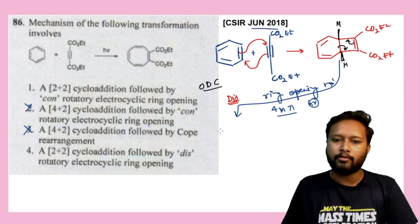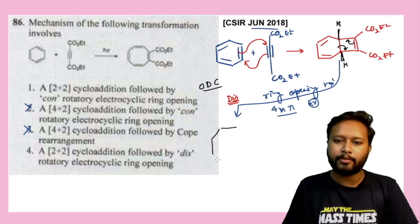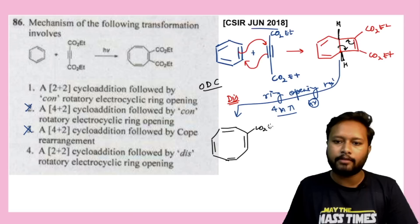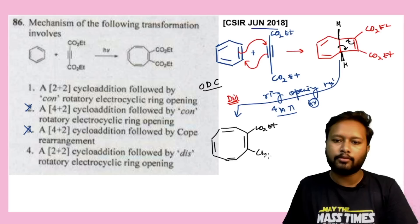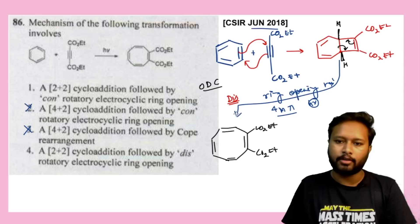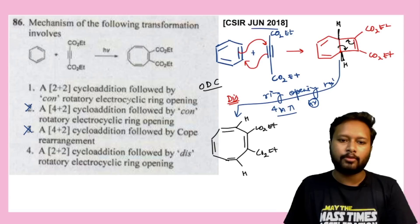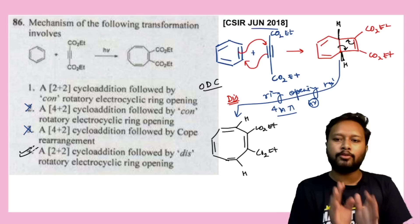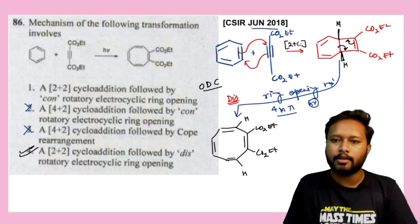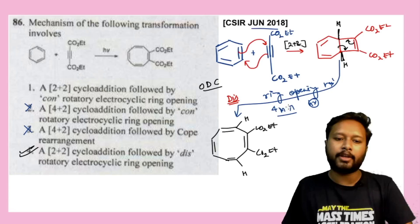Let me draw the eight-membered ring with double bonds, CO₂Et groups remaining as they are, and the two hydrogens going in opposite directions. That gives us the final product, so option 4 is the correct answer. The mechanism was: 2+2 cycloaddition followed by disrotatory ring opening reaction.